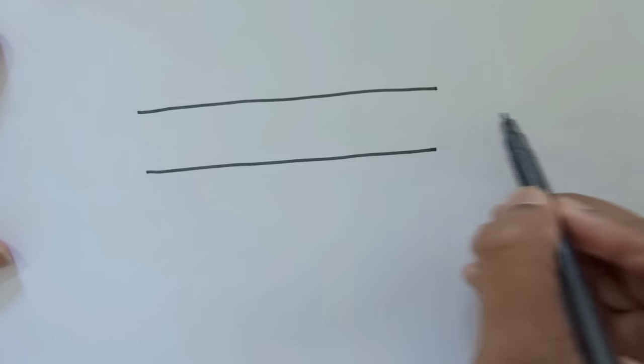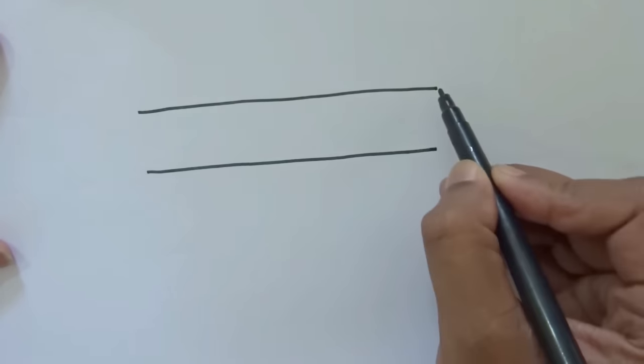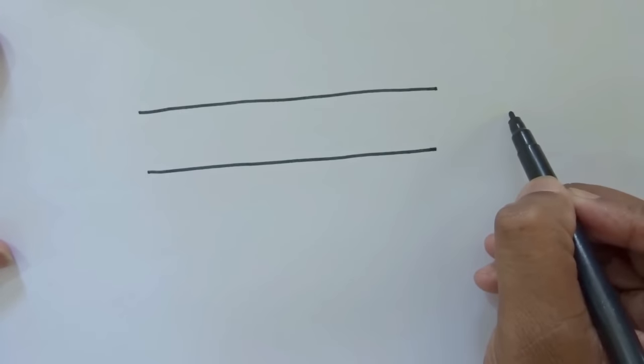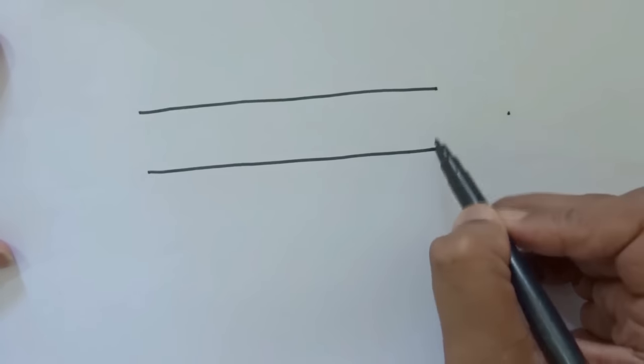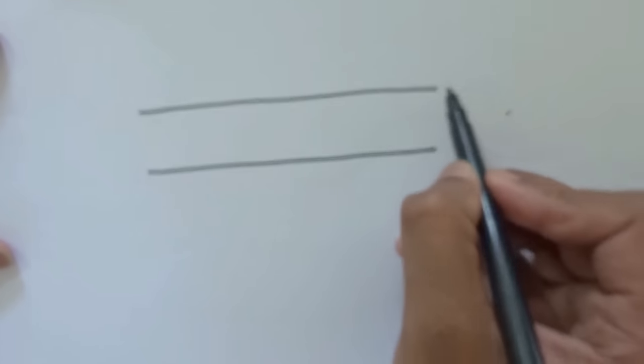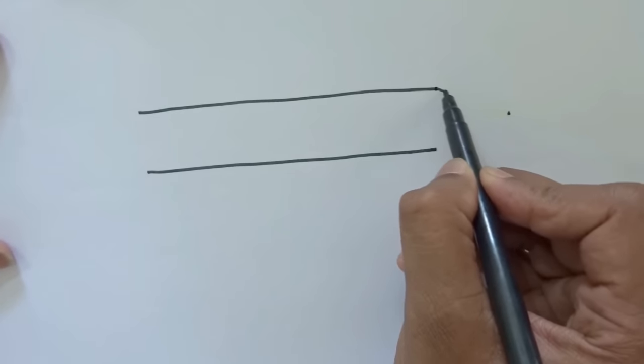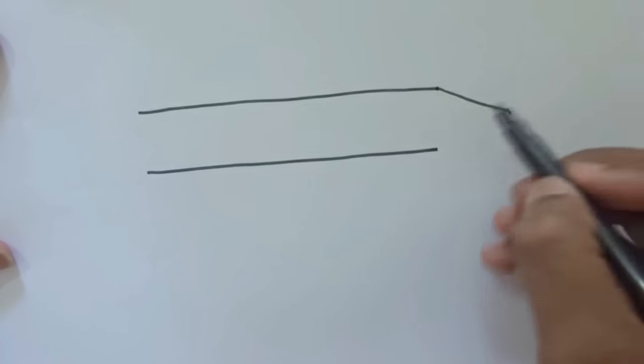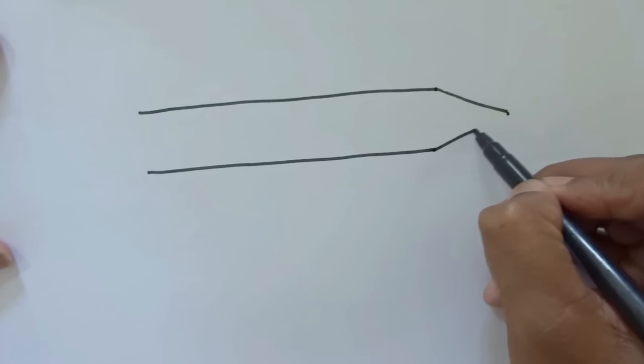Now put a point over here, roughly in the middle of these two lines, like this. And now join from here to here, from here to here.